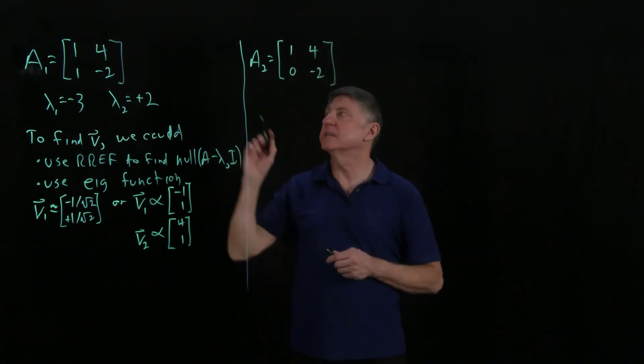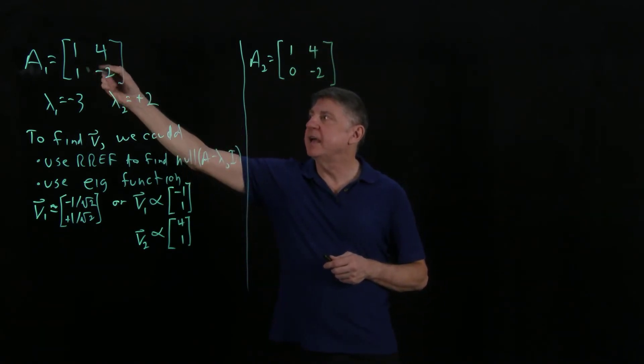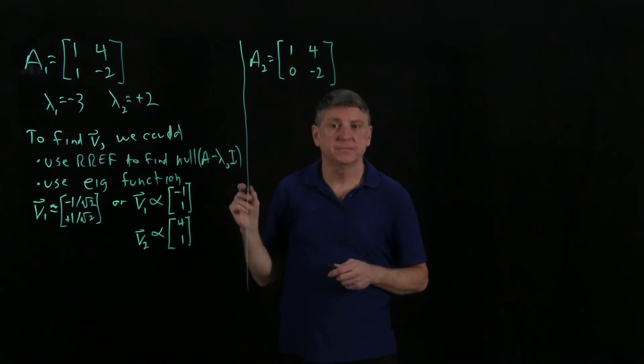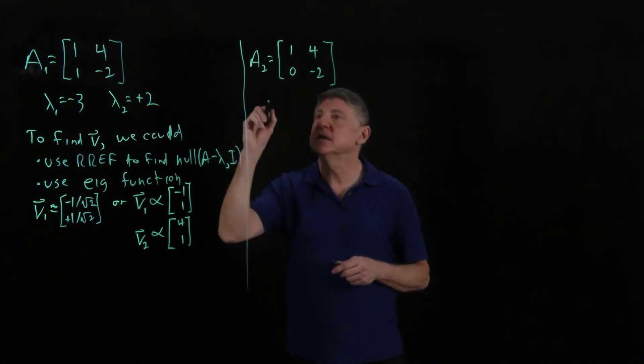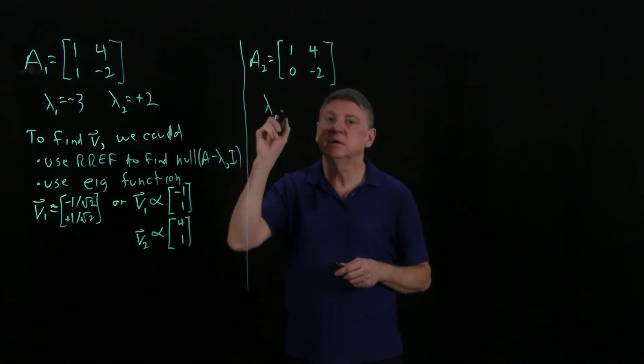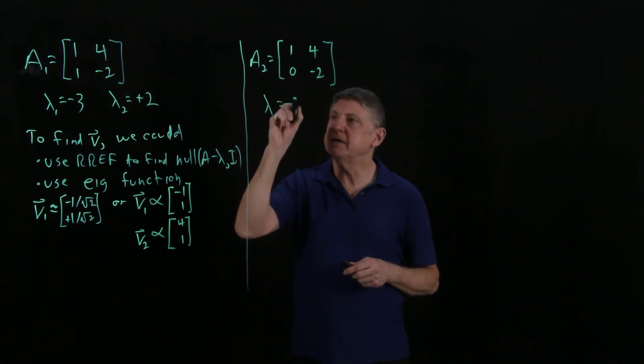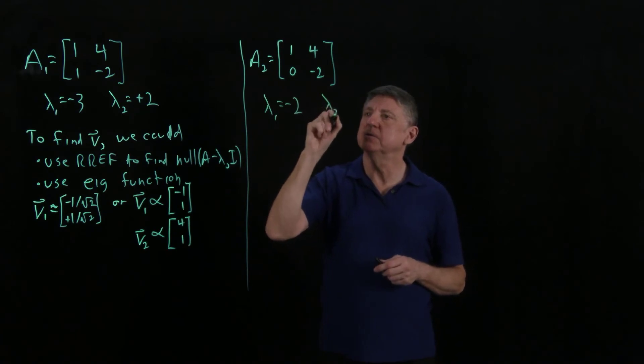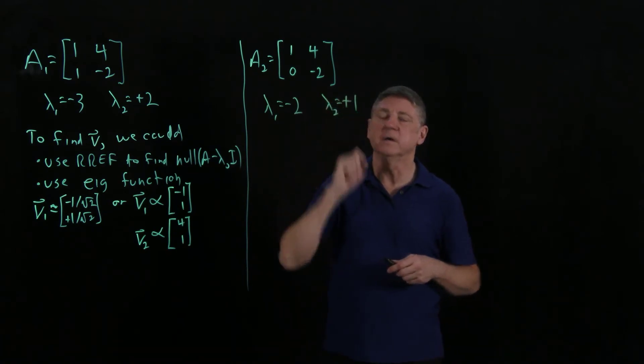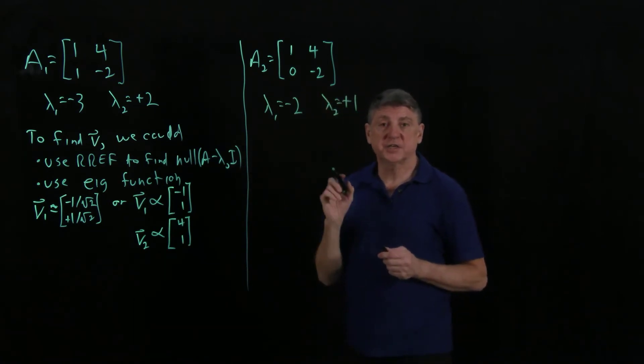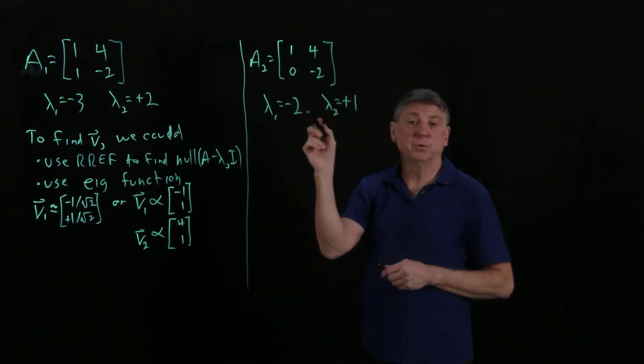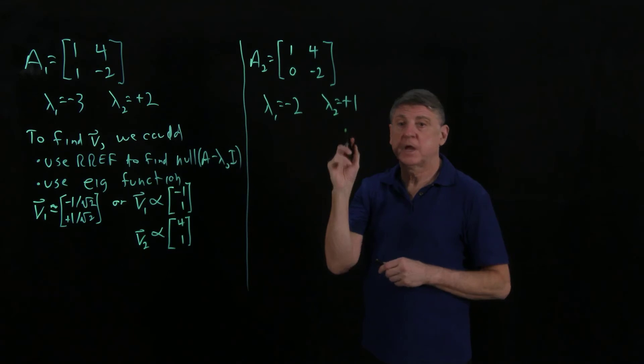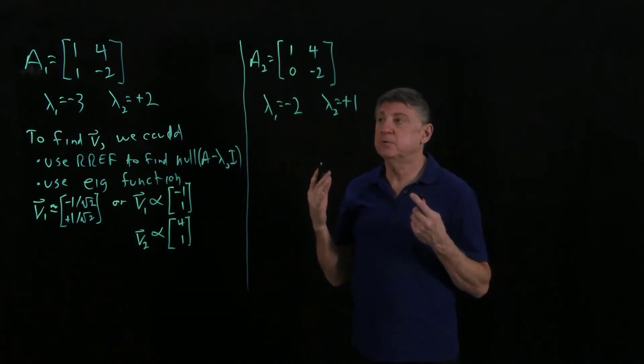You can see all I've done is taken this matrix and annihilated that entry. What I find when I do the calculations is that now lambda 1 equals minus 2, and lambda 2 equals plus 1. When I make a change of one entry in this matrix, I've changed both of the eigenvalues. Again, the eigenvalues are distinct,